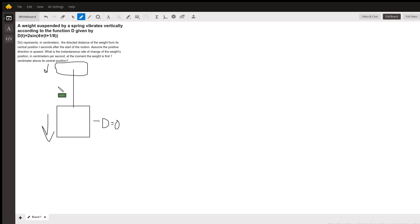We need to find the time at which it is one centimeter above its central position. So we plug in one for d, for distance: d equals 2 sin(4πt + 1/8). I'm gonna save on some writing time because I only have five minutes total and it's a pretty long problem. Start by saying that 1/2 is equal to the sine, right? I just divided by two.